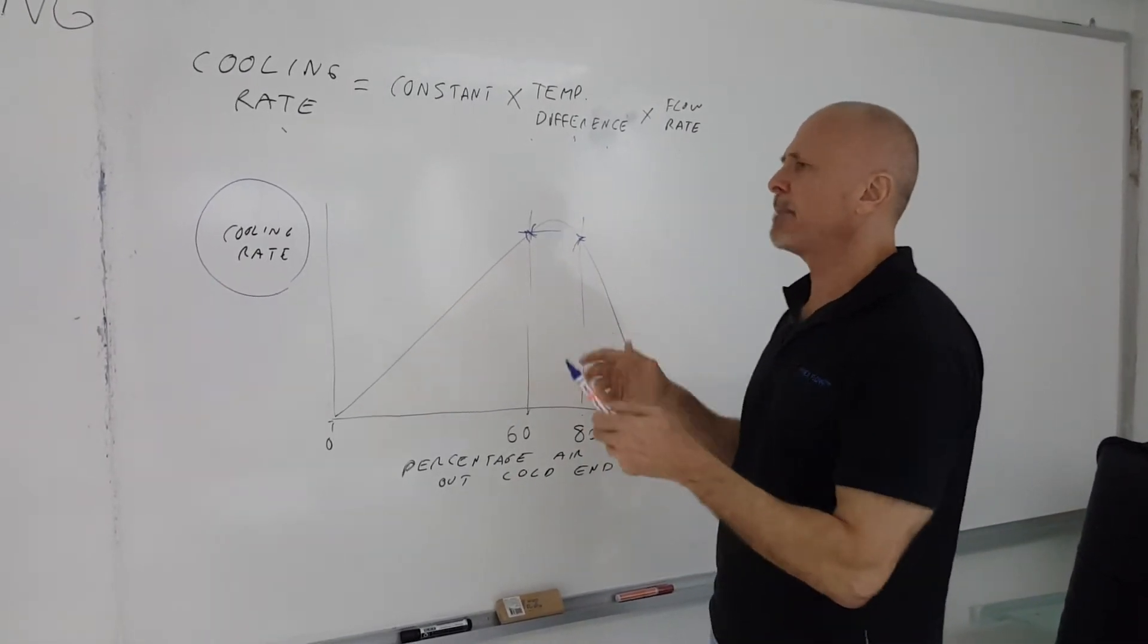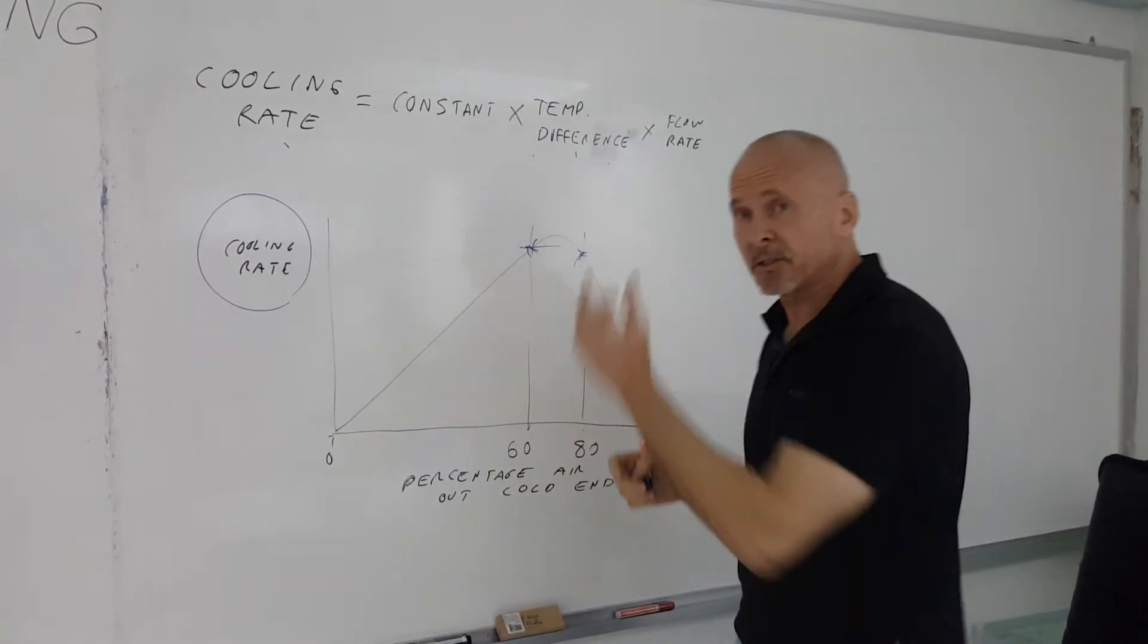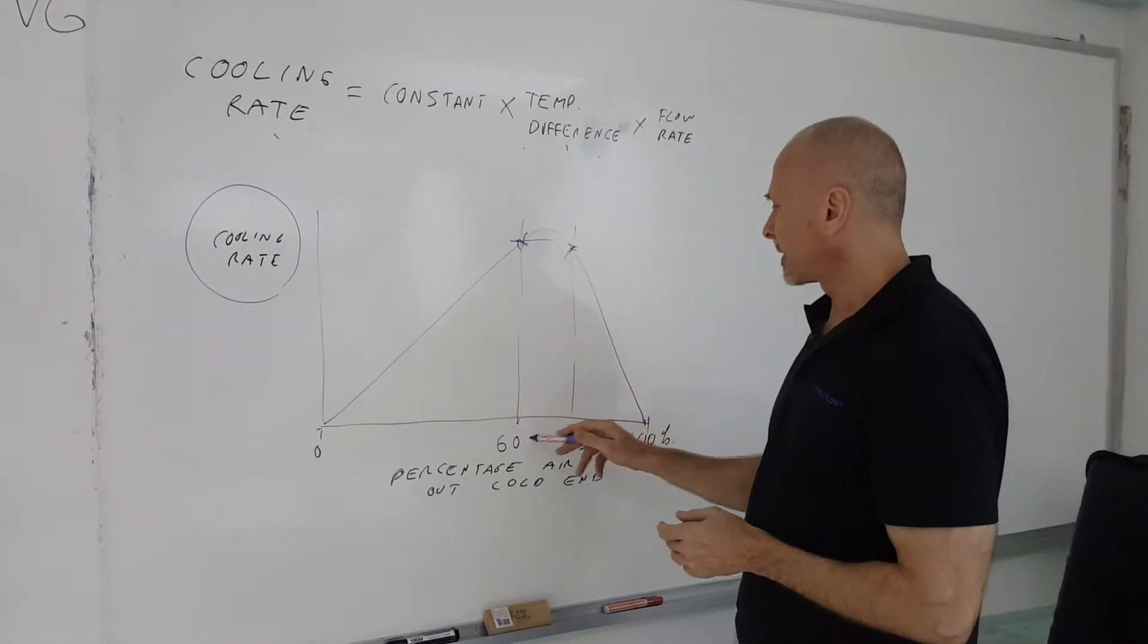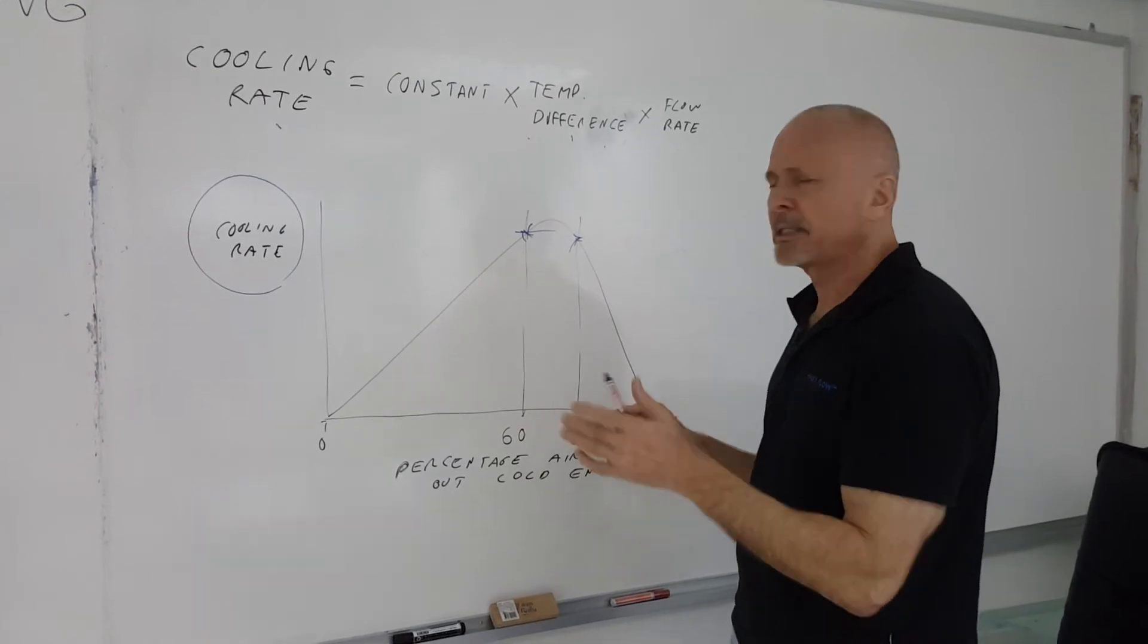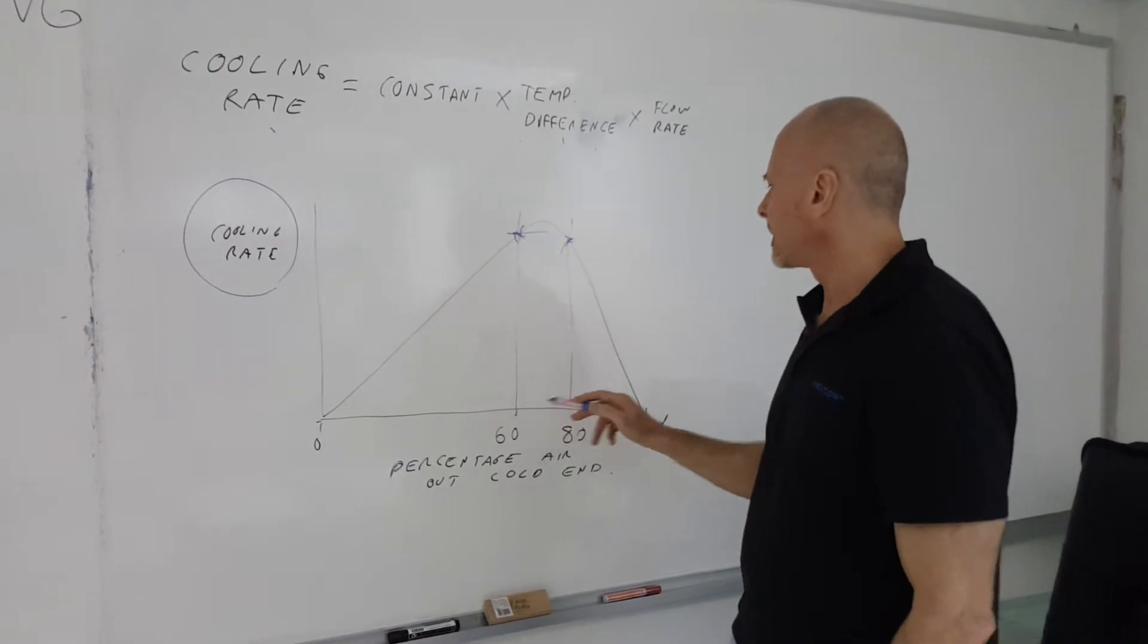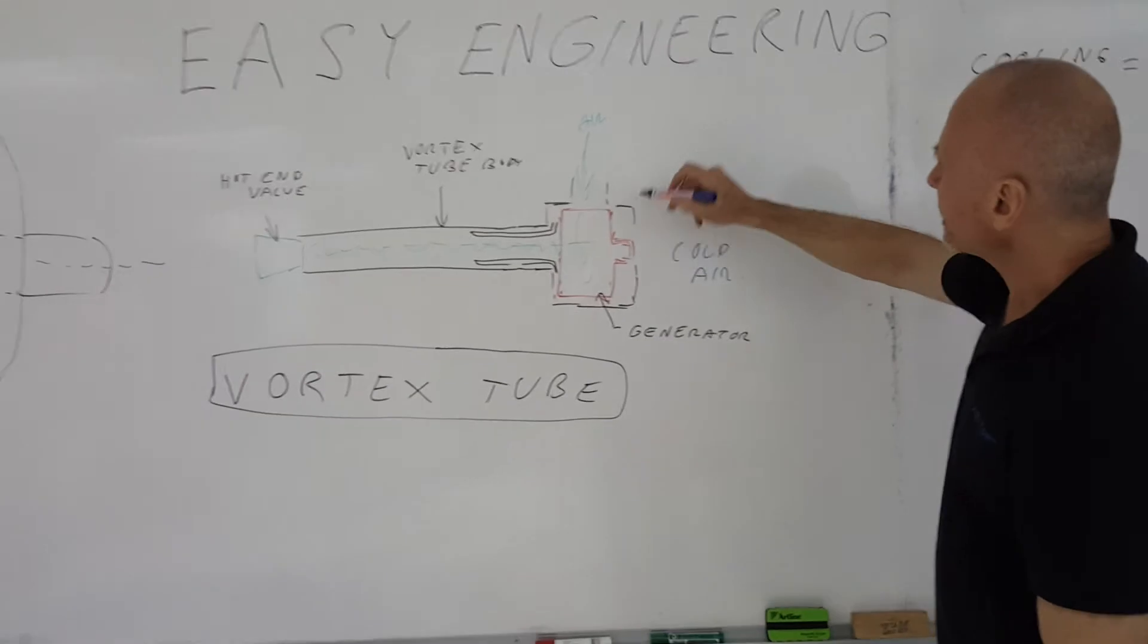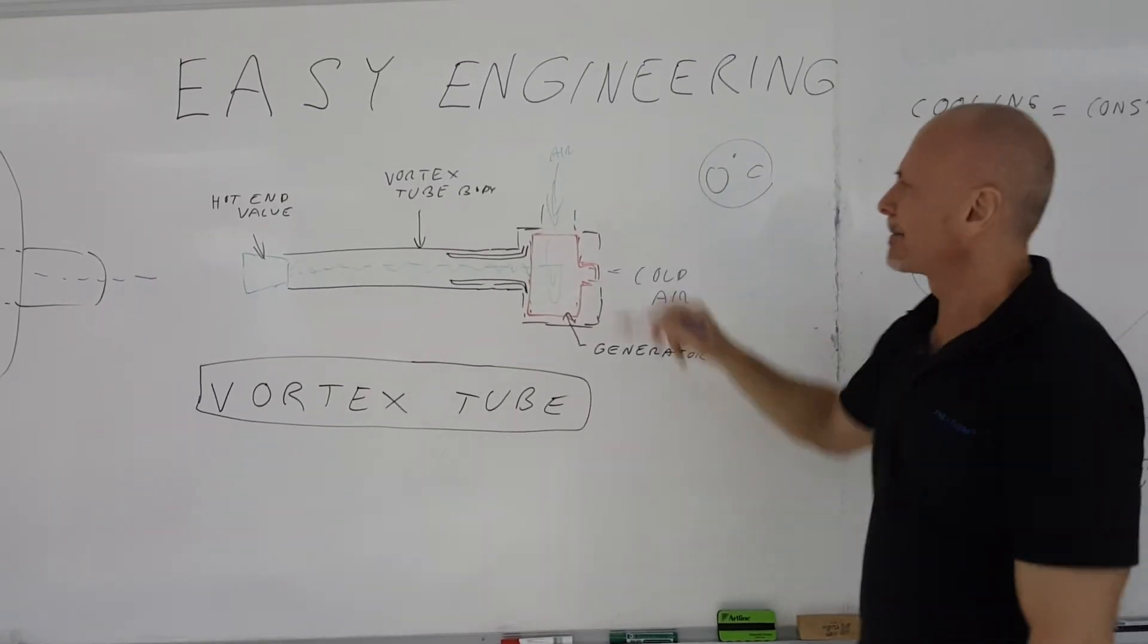And then the same thing with the temperature of the compressed air going into the vortex tube. The temperature of the compressed air going into the vortex tube is higher, you're better off at the 60 than the 80. So somewhere between 60 and 80 seems to be an optimum level. What's interesting is that if you have the compressor operating between 60 and 80% going out the cold end, you actually get a temperature somewhere around zero degrees Celsius coming out of the cold end.